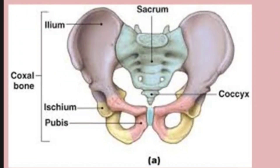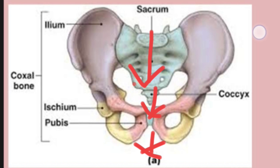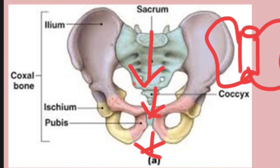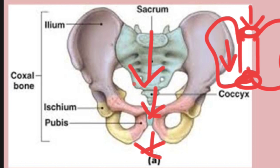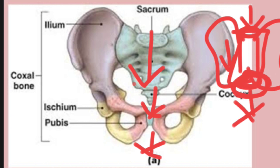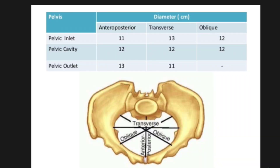Now let's look at the inlet, cavity, and outlet. The baby passes through in this way — it enters and then gets delivered. For example, in this rough diagram: this is the pelvis, this is the entry point, and this is the ending. The initial part where the baby enters is called the inlet. The baby moves down through the region called the cavity. The region where the baby is born is called the outlet.